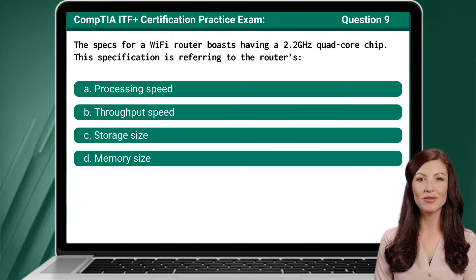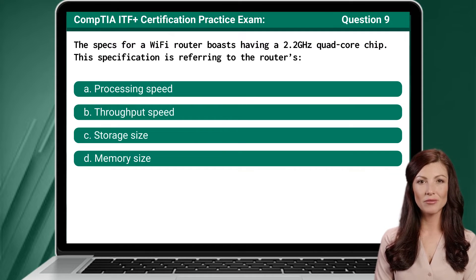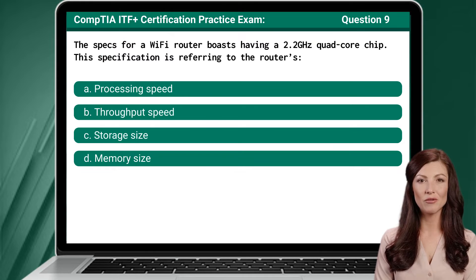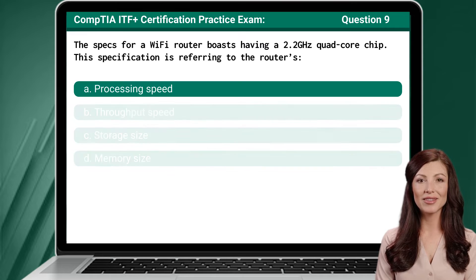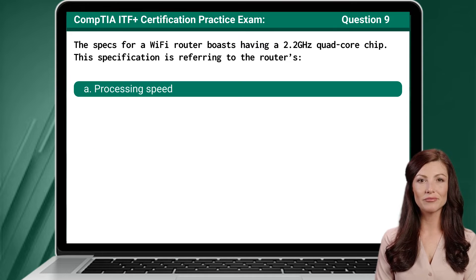Question 9. The specs for a Wi-Fi router boast having a 2.2 GHz quad-core chip. This specification is referring to the router's: The answer is A: Processing speed.